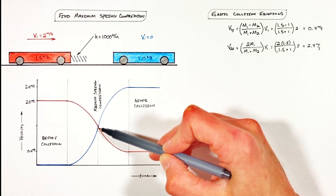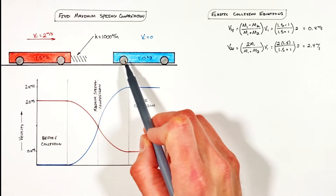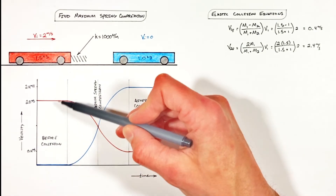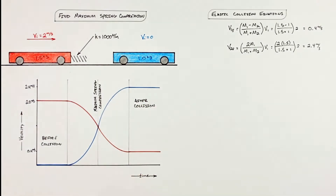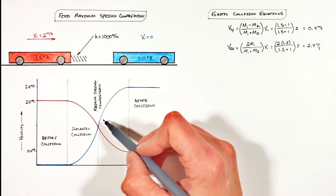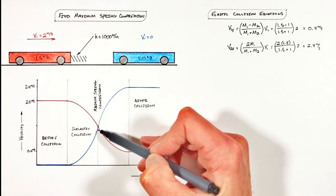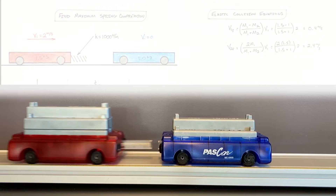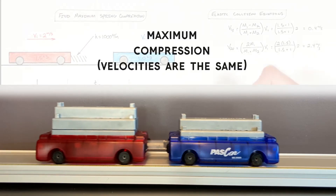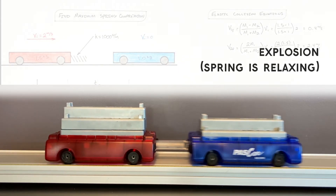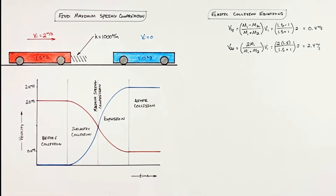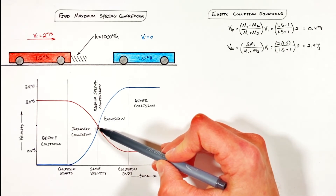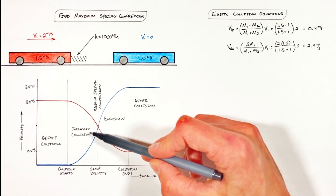The maximum spring compression occurs when the two velocities are the same — that is the key to the entire problem. The next key is taking the elastic collision and breaking it into two halves. In the first half, the two carts start at different velocities and finish at the same velocity — that's nothing other than an inelastic collision. In the second half, the two carts start at the same velocity and blast apart — that's an explosion. Since maximum compression occurs after this inelastic collision, we only need to analyze the inelastic collision in the first half.